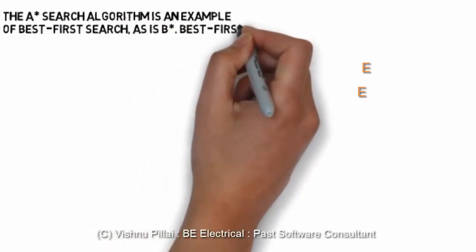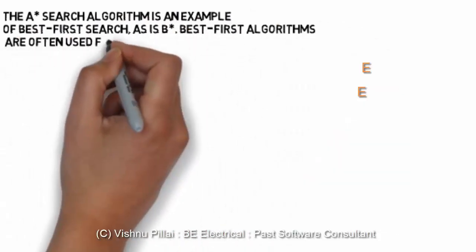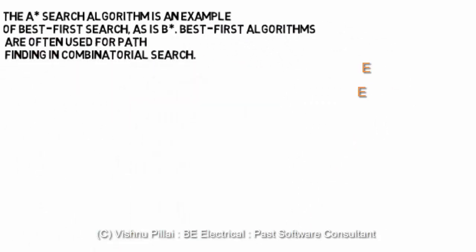That's one way of using the best first search algorithm. You have found a goal which was suggested to you using a search algorithm. The A star search algorithm is an example of best first search as is B star.